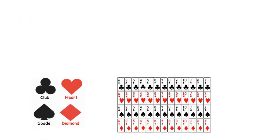I have a picture here of a complete pack of cards. A complete pack of cards, which is our sample space n(S), is made up of 52 cards. So we have 52 cards in a pack of cards, as you can see here.